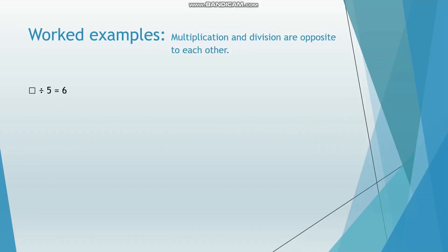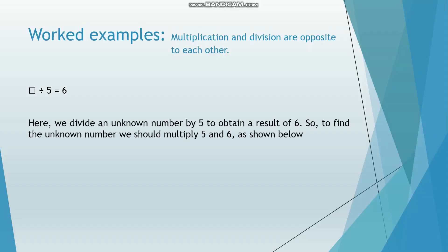Let's see another example. A blank box divided by 5 is equal to 6. Here we divide an unknown number by 5 to obtain a result of 6. So to find the unknown number, we should multiply 5 and 6, as shown below. The blank box equals 5 multiplied by 6, which equals 30.